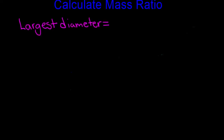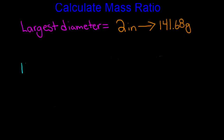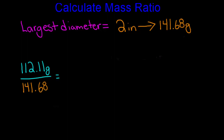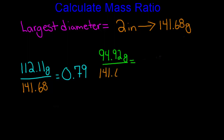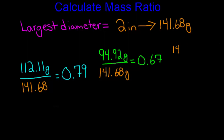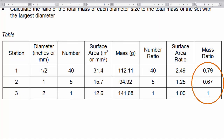The last calculation that learners will perform is the mass ratio. Much like the other two ratio examples, the largest diameter group should be used as a reference. In our case, the largest diameter was 2 inches, which had a mass of 141.68 grams. For the first station, the half-inch marbles weighed 112.11 grams, which after divided by the reference group of 141.68 grams gives us a mass ratio of 0.79. The second station of one-inch marbles had a mass of 94.92 grams, which divided by 141.68 grams gives a mass ratio of 0.67. And our third station, with a 2-inch marble, had a mass of 141.68 grams, which when divided by itself gives a mass ratio of 1.